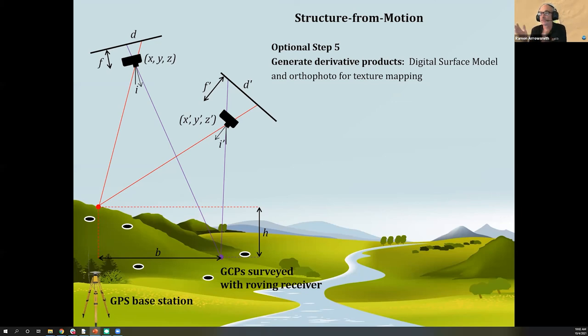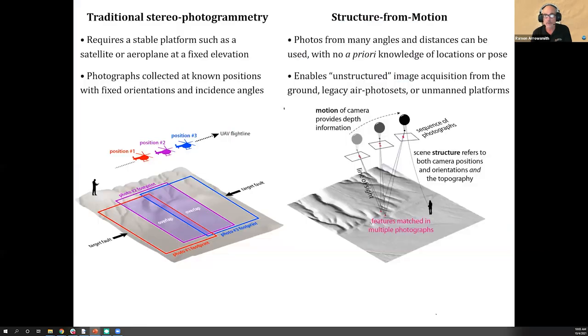Once we've dealt with that, once we have our result, we produce derivative products. A lot of times those are 2D products we'll take into our GIS software, like digital surface models or orthophotos, or the 3D products, which are point clouds or meshes. This is a summary: traditional stereophotogrammetry requires a stable platform with fixed elevation. We have to know a lot to do traditional photogrammetry. Structure from motion relaxes a lot of that and really lets us do this unstructured image acquisition from the ground, from legacy aerial photography, from uncrewed platforms. It's really revolutionary, and that's why we're all here.